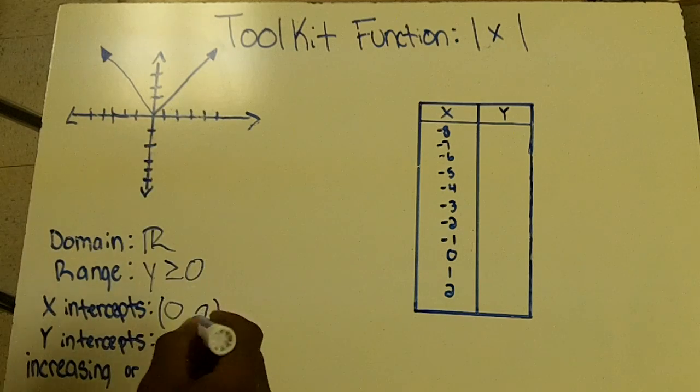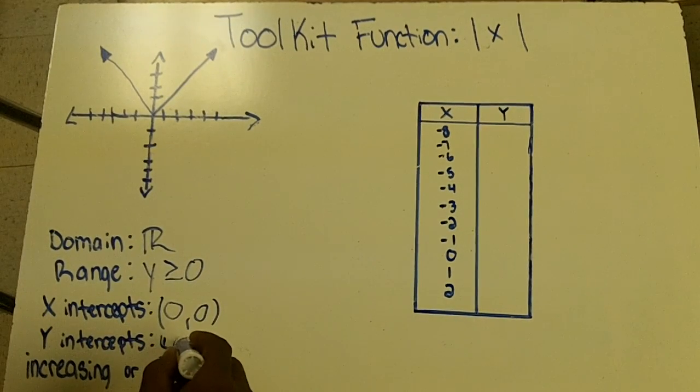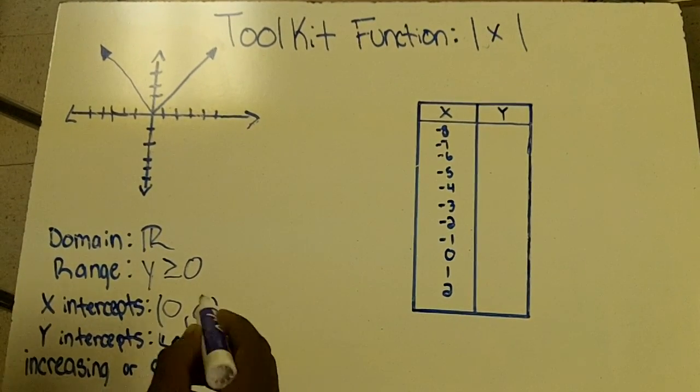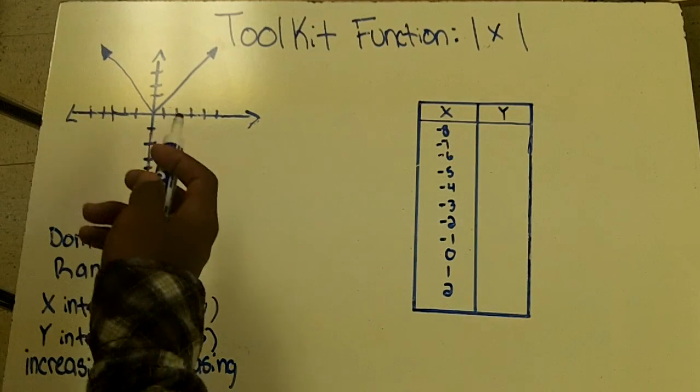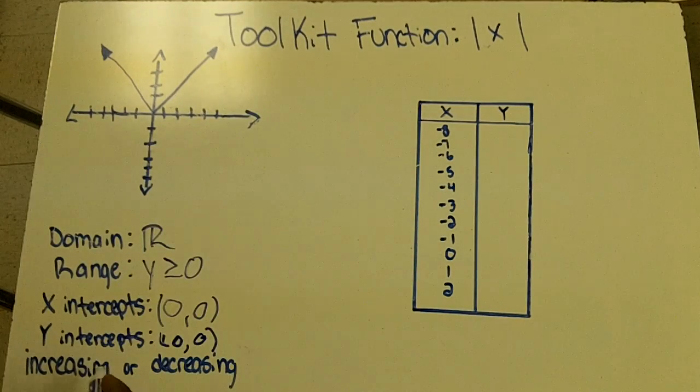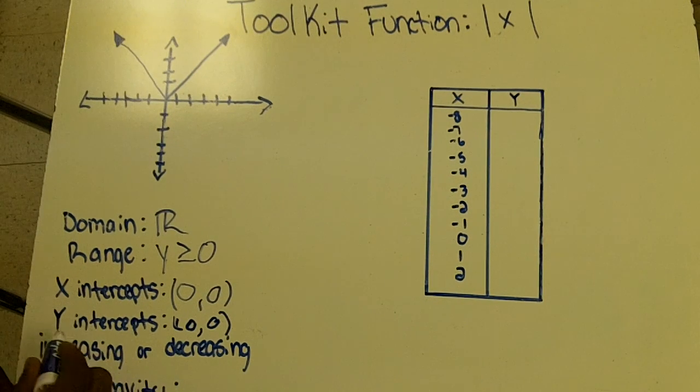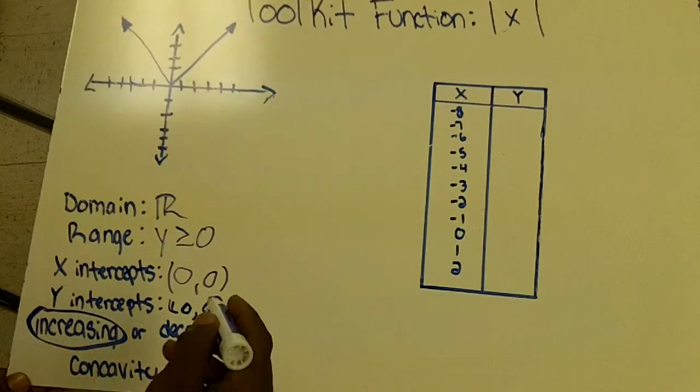Which is right there, and the y-intercept is also zero, zero. Since the lines are going up, it's increasing, and the concavity is up.